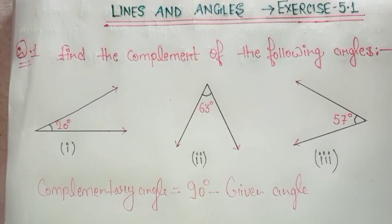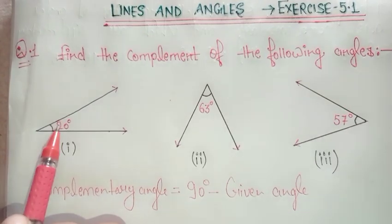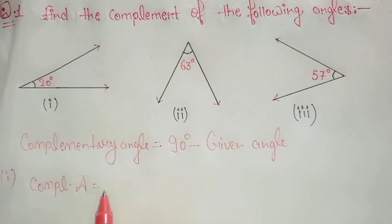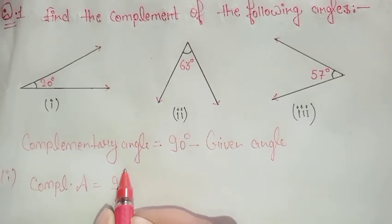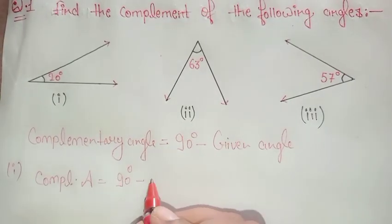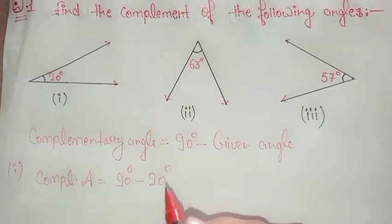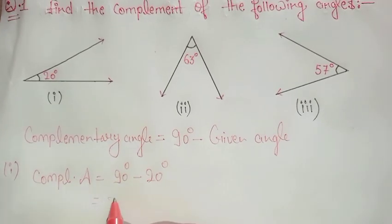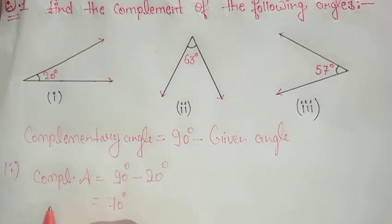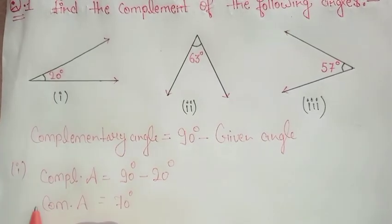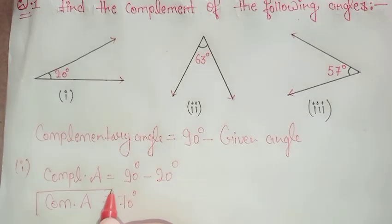So now, the first question: you have to find the complementary angle of 20 degrees. Complementary angle equals 90 degrees minus the given angle, and the given angle is 20 degrees. Now subtract 20 from 90 degrees — what you will get is 70 degrees. So the complementary angle of 20 degrees is 70 degrees. Is it clear?